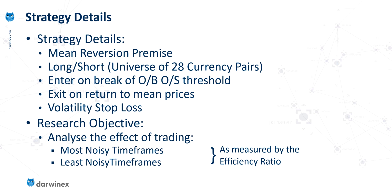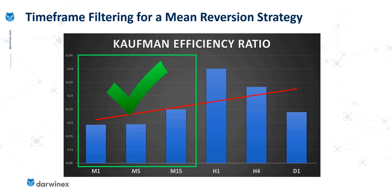I've categorized the time frames into two blocks. The first is those that exhibit the noisiest activity — the M1, M5, and M15. Because they're the noisiest, the theory says these will be the most suited to mean reversion type strategies, so these should perform quite well. Then we have the higher time frames, which are more efficient and therefore less noisy, and these are the ones that maybe don't perform quite as well.